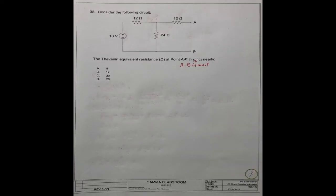Question Number 38. Consider the following circuit. The Thevenin equivalent resistance at the point A with B is most nearly one ohm. This question is similar with question 37.